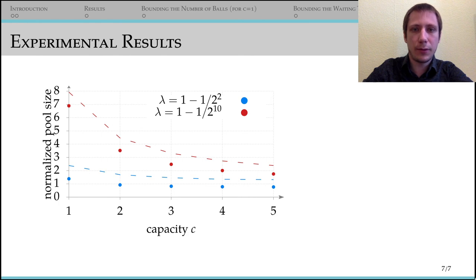As expected, our bounds, the dashed lines, are rather pessimistic since we did not optimize the constants. However, the simulations indicate that our bounds for the number of balls in the system are tight up to a constant factor and for small values of C, we see that the number of balls is more or less anti-proportional to the capacity.